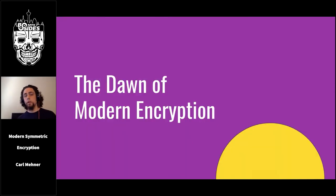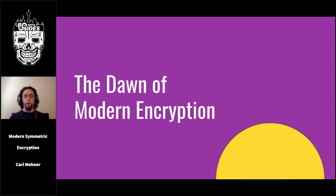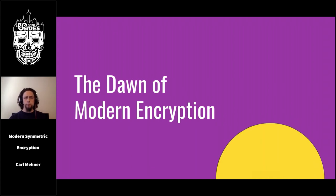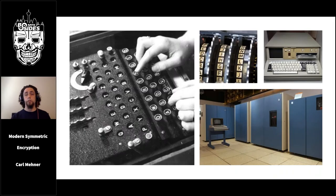This brought an important feature to enciphered messages. Previously, any plain text letter always translated to the same cipher letter, but now there were many more plain text possibilities for every letter in the cipher text, making decryption much harder. World War II is often considered the start of modern cryptography, with the advent of cipher machines that allowed more complex ciphers to be executed faster.